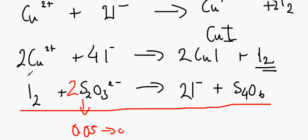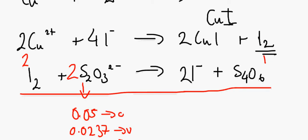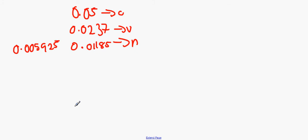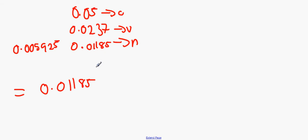Now we know the moles of iodine that reacted. All we need to do is multiply this by 2, because the molar ratio of Cu2+ to I2 is 2:1. Then we multiply by 2 again, giving 0.001185 moles of Cu2+. Even though we've ended up back where we started, it's very important that you do this step, because sometimes the molar ratios may change and you might get a rogue number.